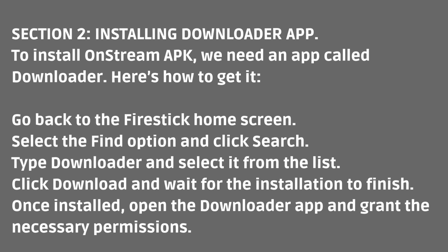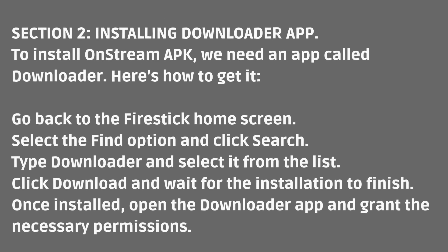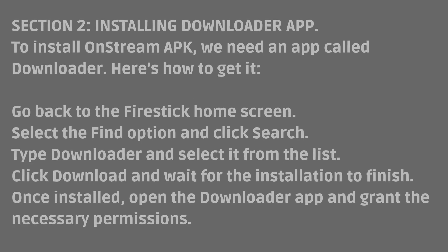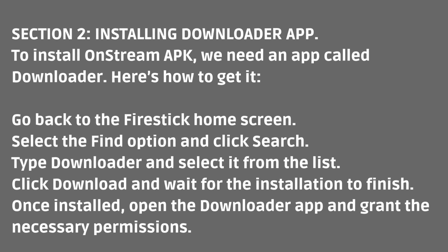Section 2: Installing the Downloader App. To install OnStream APK, we need an app called Downloader. Here's how to get it. Go back to the Fire Stick home screen. Select the Find option and click Search. Type Downloader and select it from the list. Click Download and wait for the installation to finish. Once installed, open the Downloader app and grant the necessary permissions.